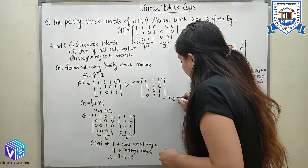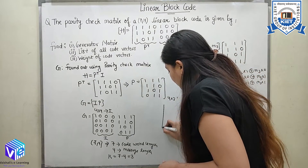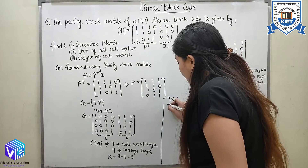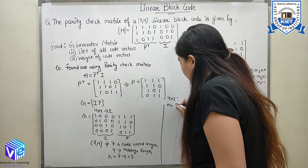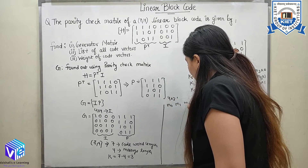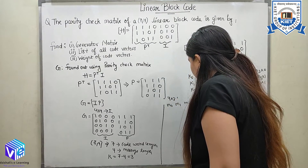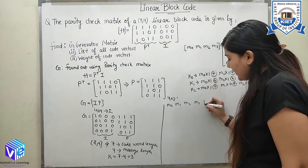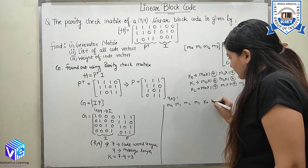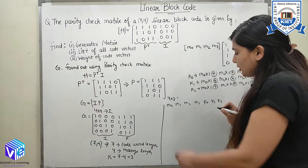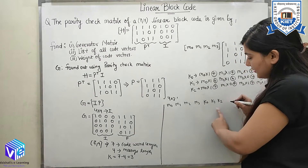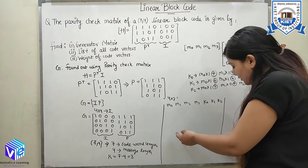I can now find out the coded output. The coded output contains the message bits M0, M1, M2, M3 plus 3 parity bits K0, K1, K2. This gives my 7-bit codeword.